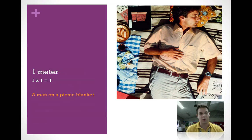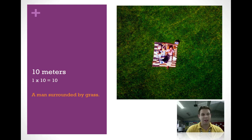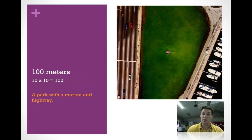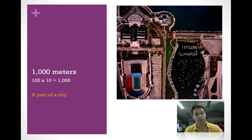We start off with one meter by one meter — that's what we see. Then we do one meter times 10 and get 10 meters; now we can see the man with some grass around him. When we take 10 meters times 10, we get 100 meters — now we can see the whole park, a highway, and a little marina. Take 100 meters times 10 and we get 1,000 meters — a one-kilometer view where we can see a football stadium and lots of boats.